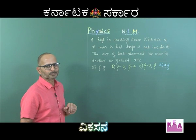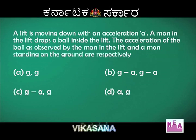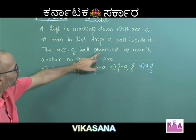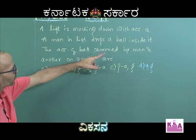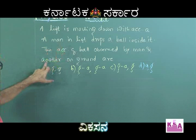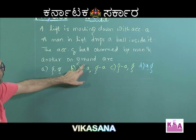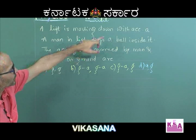Now let me read the problem. There is a lift which is moving down with an acceleration. The lift is moving down with an acceleration and a man in the lift drops a ball inside it. The acceleration of that ball has to be observed by two people — one is the man in the lift who dropped the ball, and the other is a man on the ground.